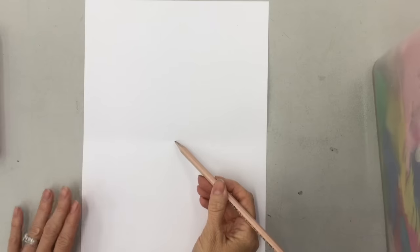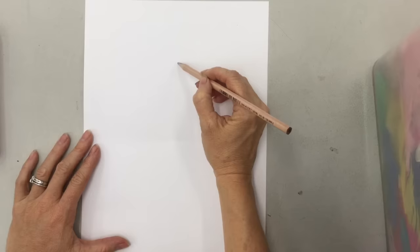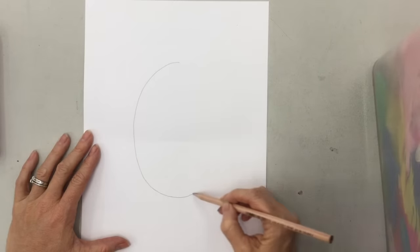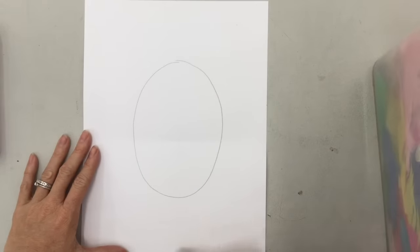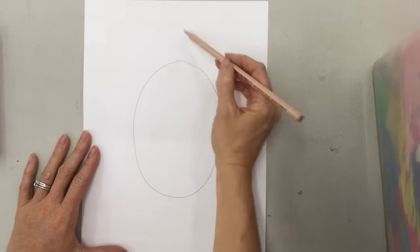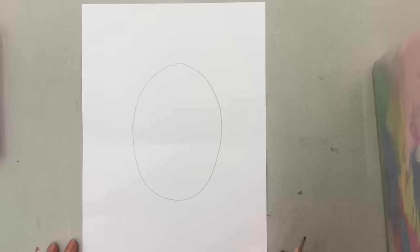So I know the middle is right there, and you need to start with kind of an oval shape. Now it can't be too big and can't be too small because you need to have some room below and some room on top. So there's your oval.